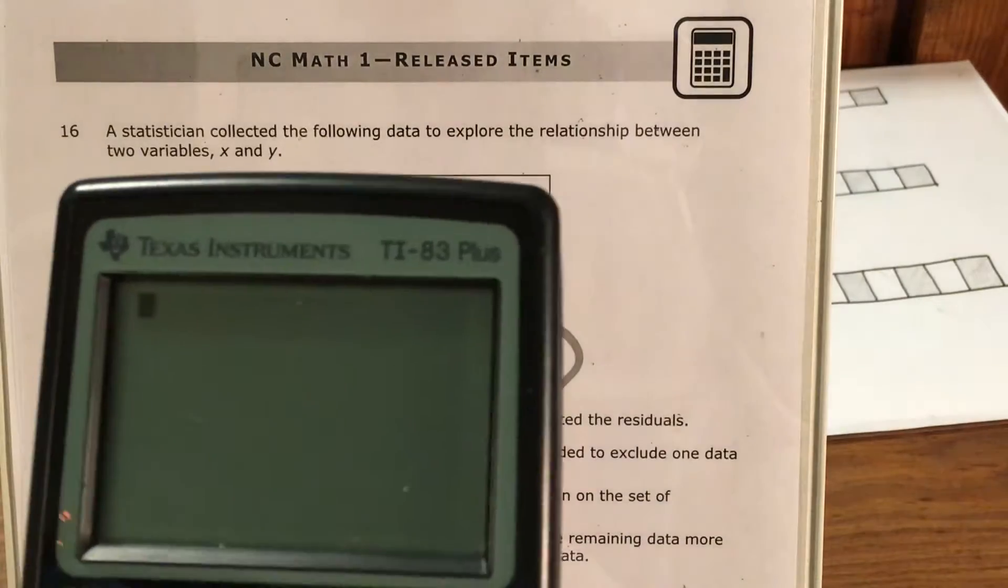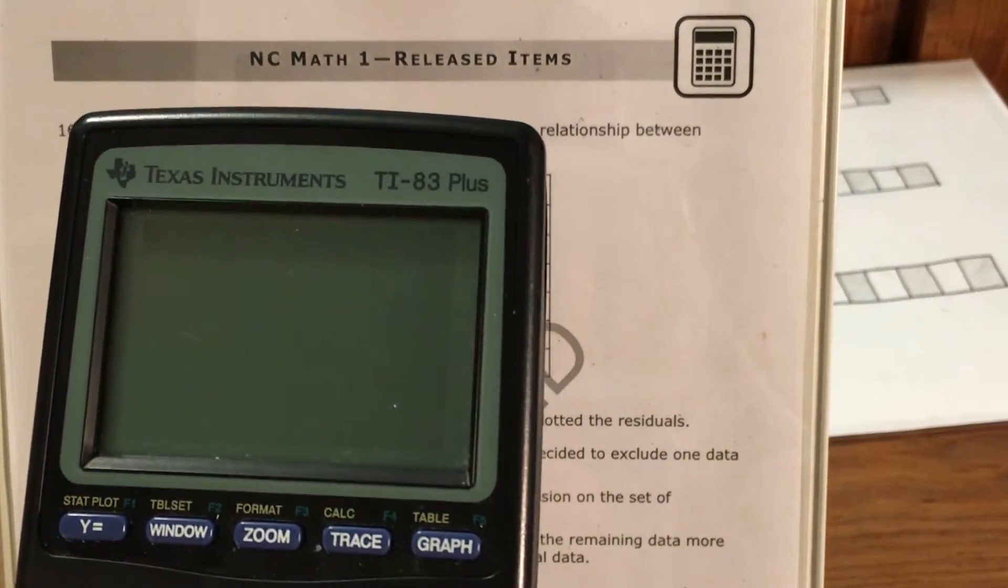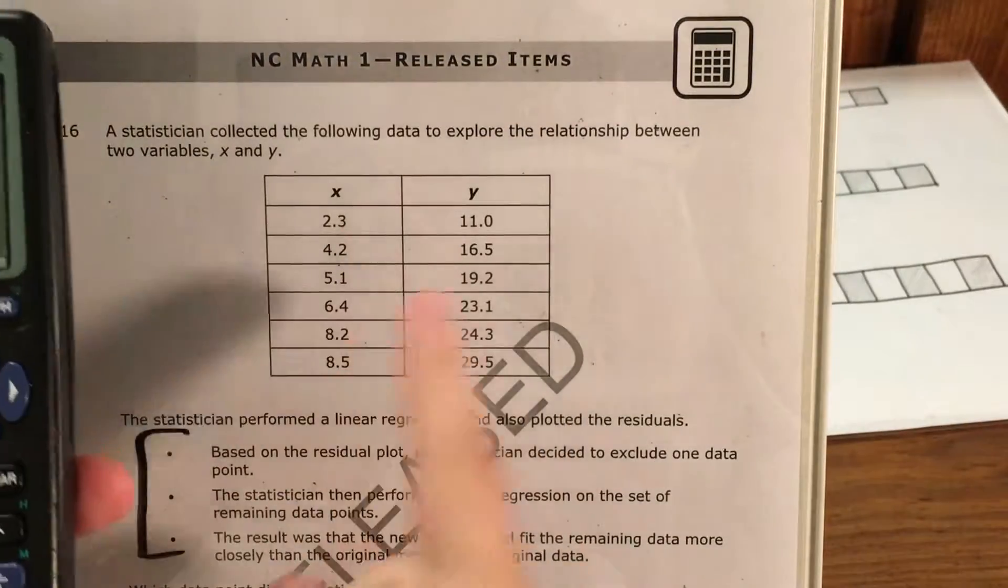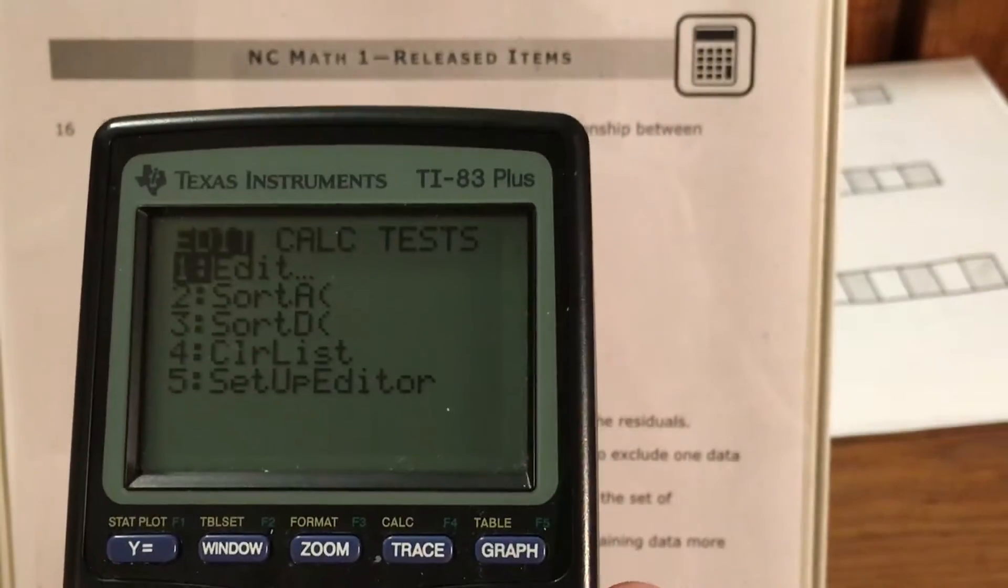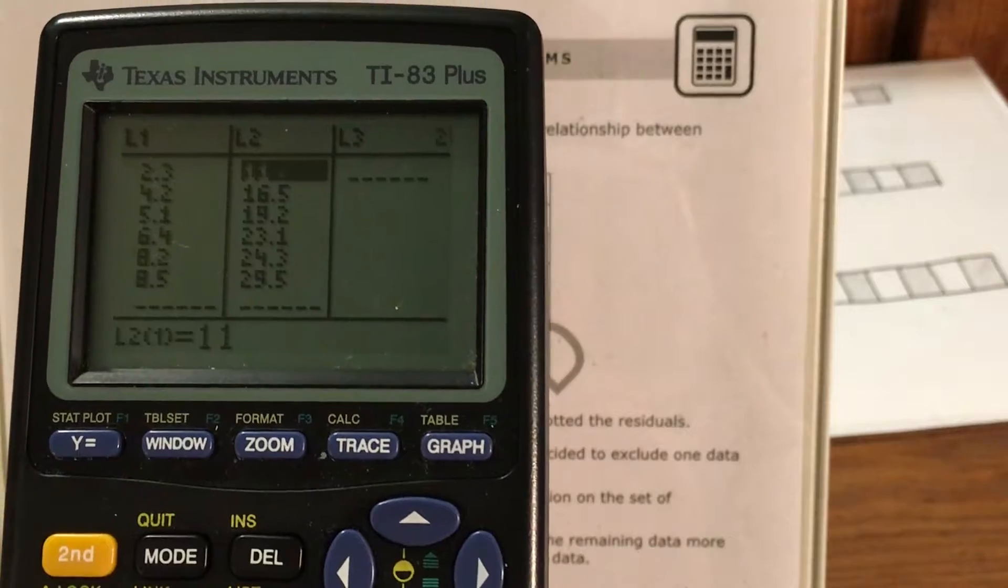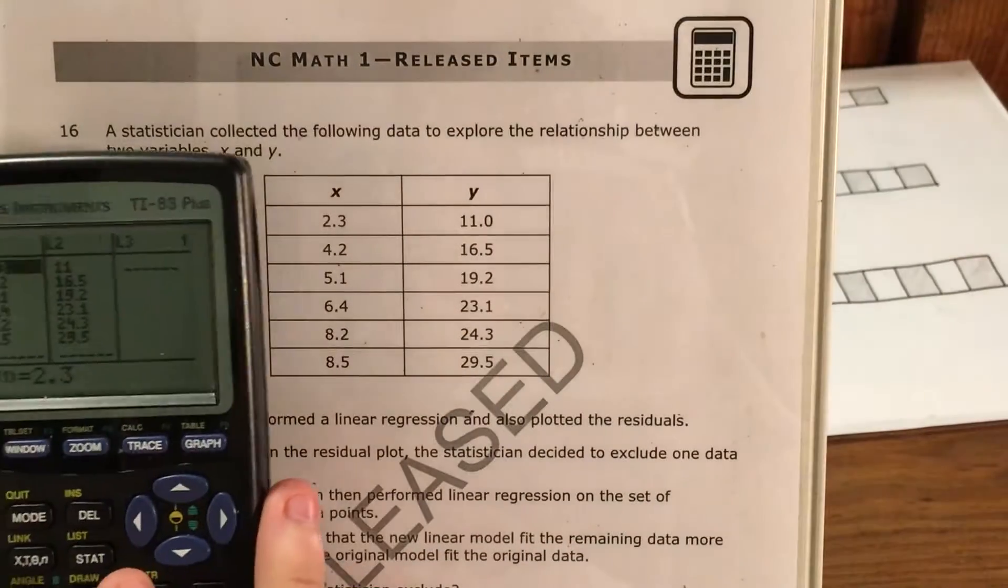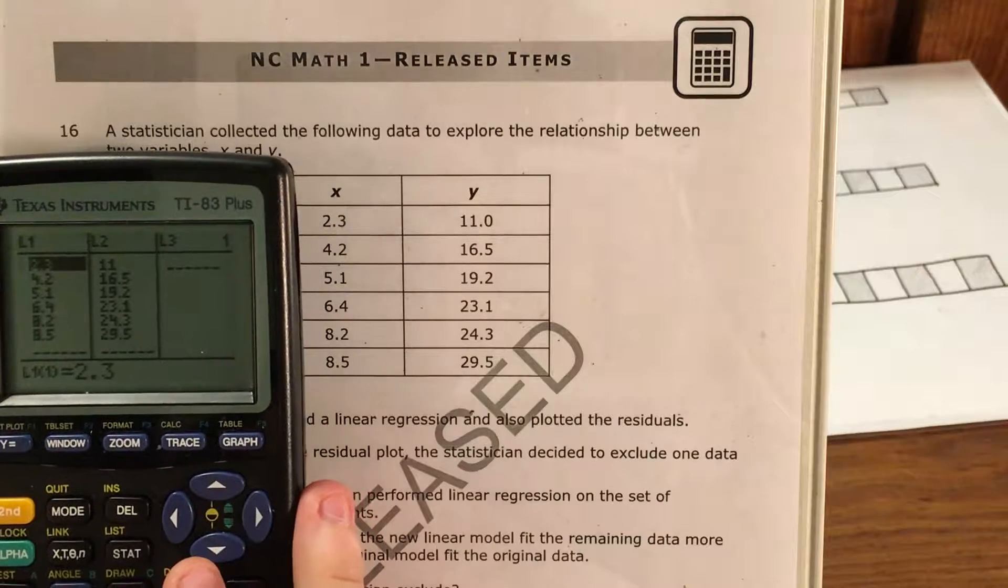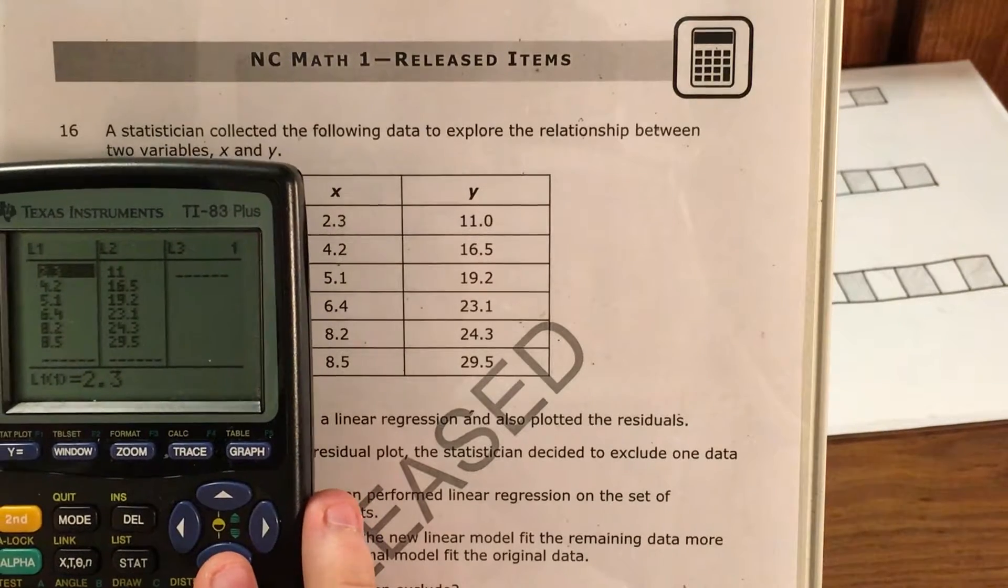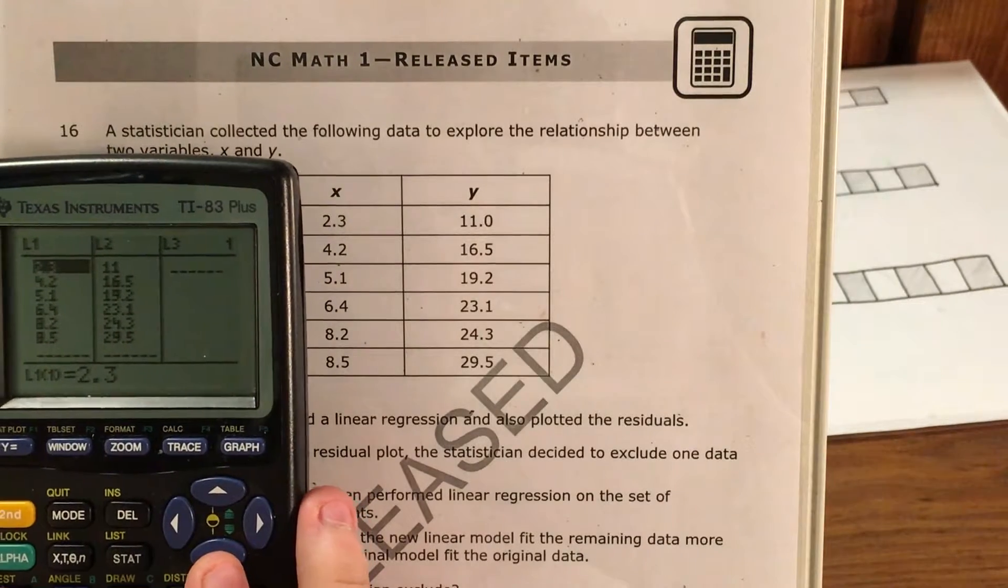So here's my TI calculator and in order to type in this data, I go to stats and I press enter to go to the edit menu. Now I've actually already put this data in. I went ahead and used list one to type all my x values and list two to type all my y values.